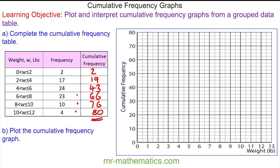To plot this cumulative frequency graph, we're going to use the upper bound. So with a weight less than 2, there's a cumulative frequency of 2. So we plot this point here. For a weight less than or equal to 4 pounds, there's a cumulative frequency of 19. So we plot this point here. And then less than or equal to 6, we plot 43. Less than or equal to 8, we plot 66. And for 10, we plot 76. And finally, less than or equal to 12, we plot 80.